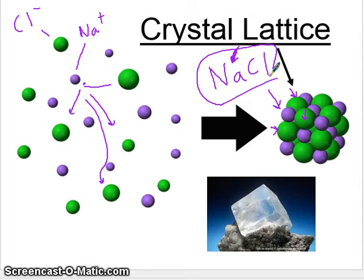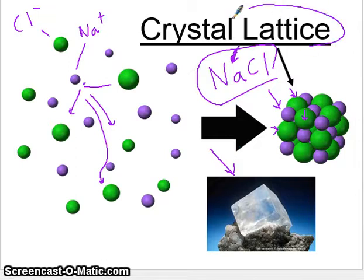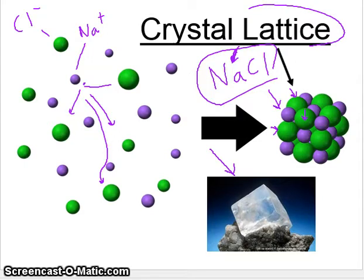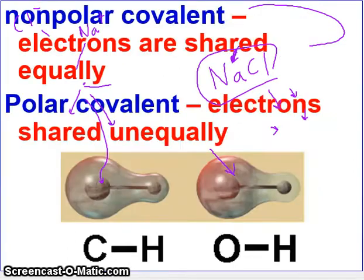This is called a crystal lattice — a structure with alternating positives and negatives in a huge arrangement. This is true of ionic compounds, a very different picture from what you see in covalent compounds. In covalent compounds, the picture we see is a sharing of electrons.